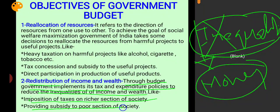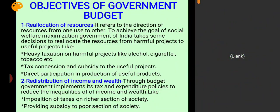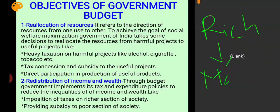The money collected is then used to provide subsidies to the poor section of society. In this way, income is redistributed — poor people's income increases and inequality is reduced.